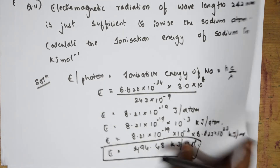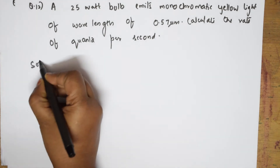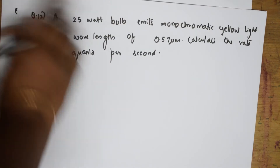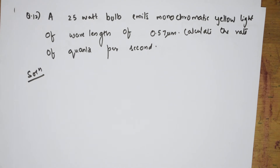Let us come back and do one more numerical from Bahadur chemistry. Here, what do they give me? A 25-watt bulb emits monochromatic light of wavelength 0.57 microns. I need to calculate the rate of quanta per second. So the same concept — we are speaking about energy. Let us start with that formula.